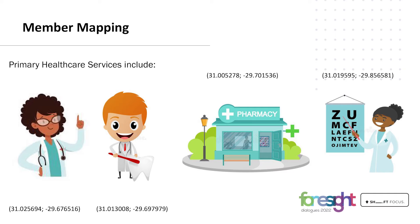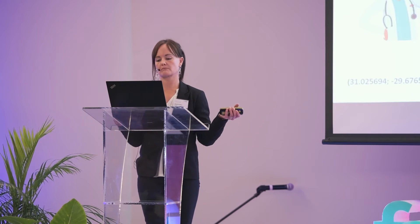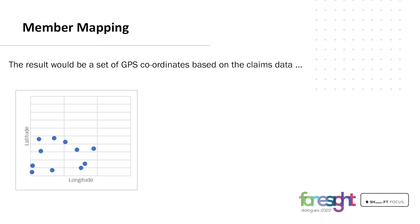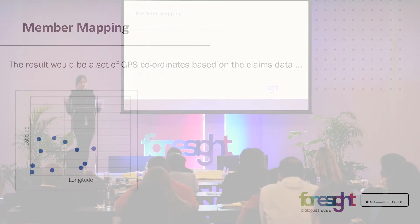For each primary healthcare interaction, we map the visits using the practice's geographical coordinates. These visits are weighted by duration, with more recent visits being allocated a higher weight. The result is a set of GPS coordinates — longitude and latitude — based on the claims data received, with each dot representing a healthcare interaction.